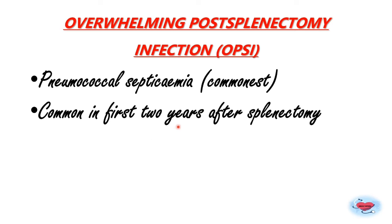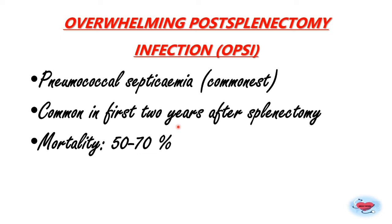Clinical features of OPSI include fever, chills, sore throat, hypotension, shock, and respiratory distress. History of splenectomy is key to diagnosis. Prevention includes pneumococcal vaccine, meningococcal vaccine, and H. influenzae type b vaccine. Next is splenic artery aneurysm.